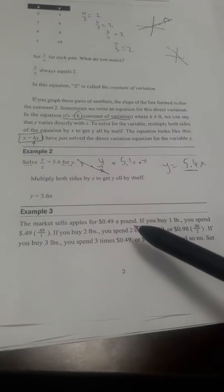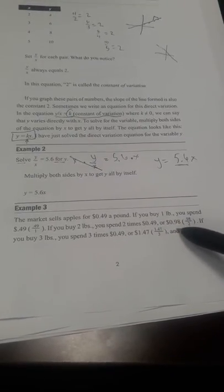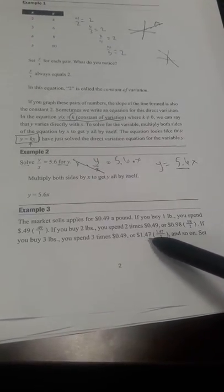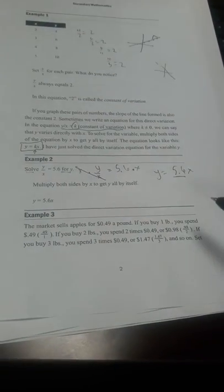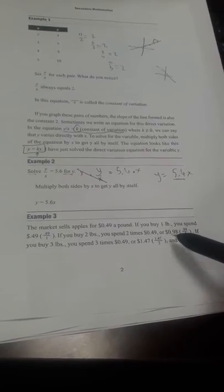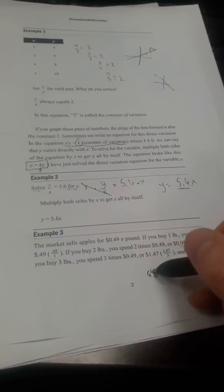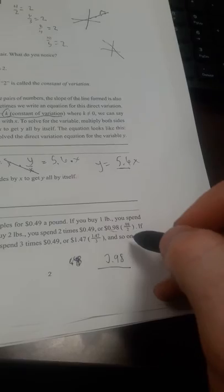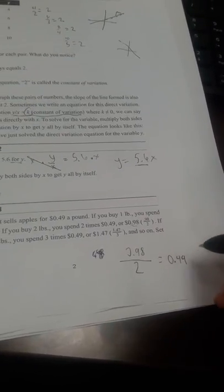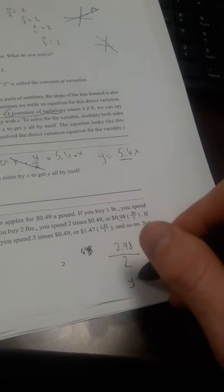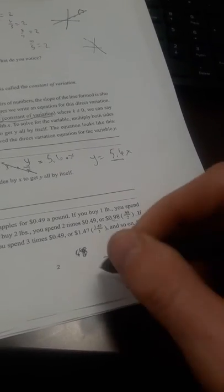Example number three. You have apples at 49 cents a pound. If you buy one pound, you spend 49 cents. If you buy two pounds, you spend two times 49 cents or 98 cents. And if you buy three pounds, you'll spend three times 0.49 or 147. So they are showing you that it is direct variation. Because every time you divide the y or your total price, 0.98 divided by the amount of pounds you have, 2 pounds, it will always equal 0.49. Because it's 0.49 cents per pound. So if we're looking at an equation, we'd say y or the price is equal to 0.49 times x, where x is the pounds, and y is the price.